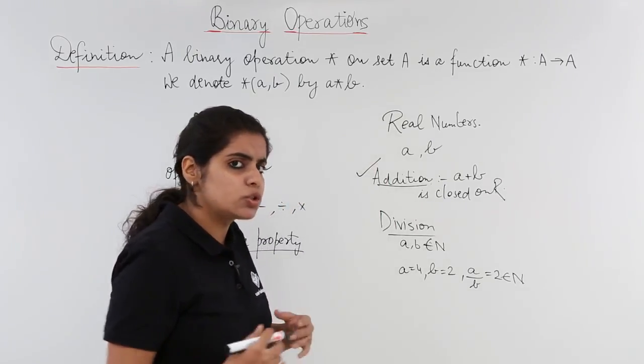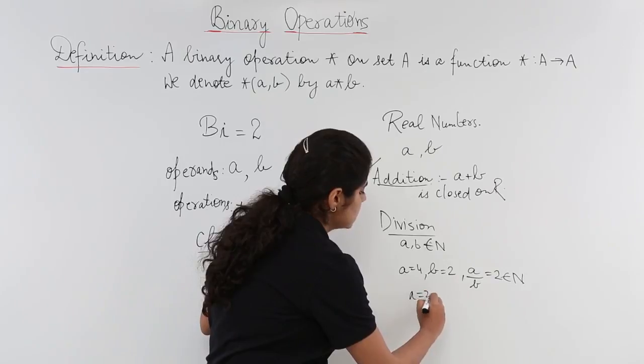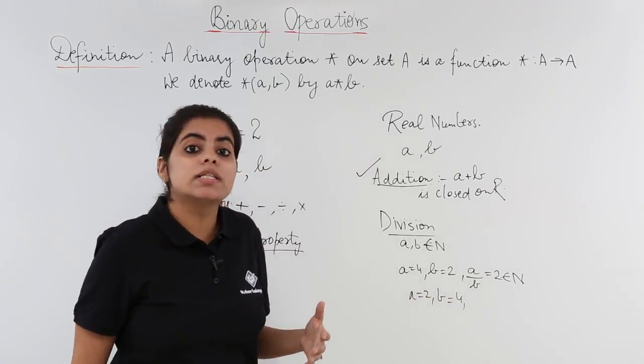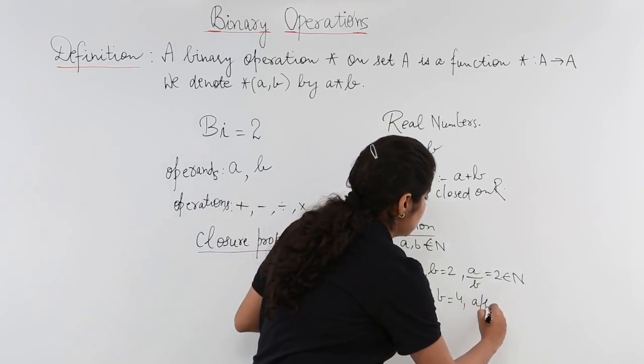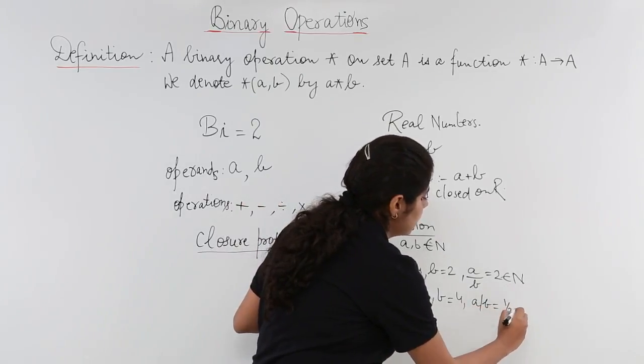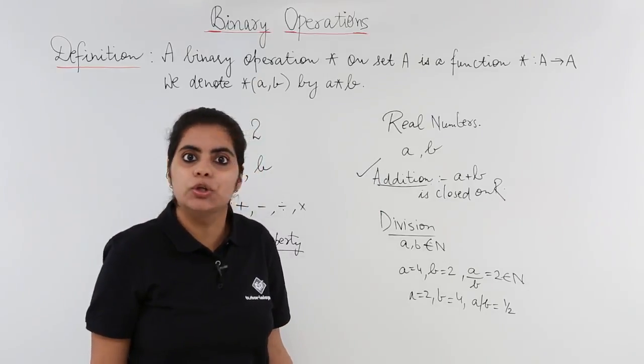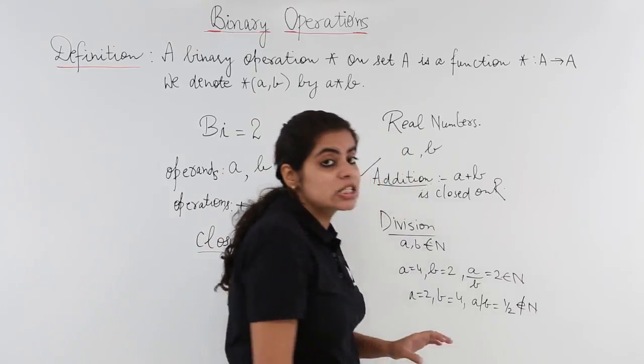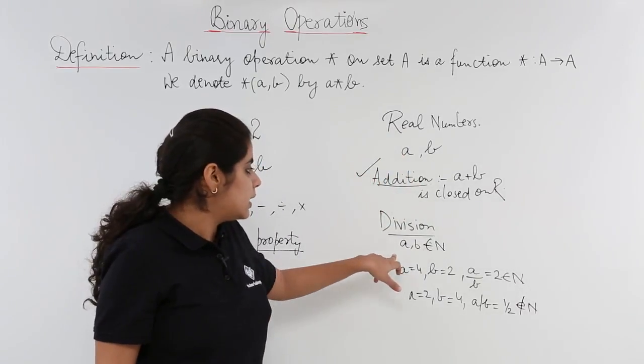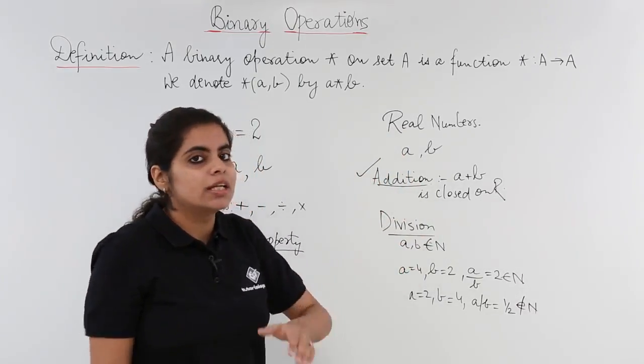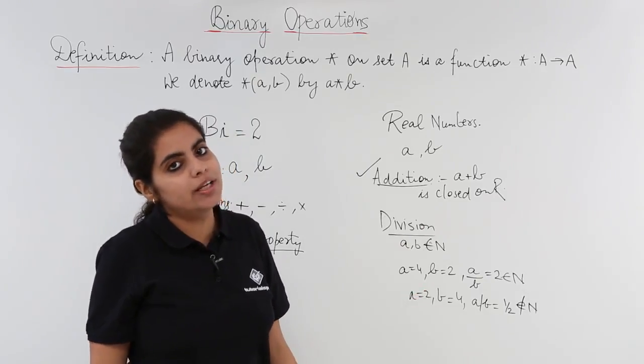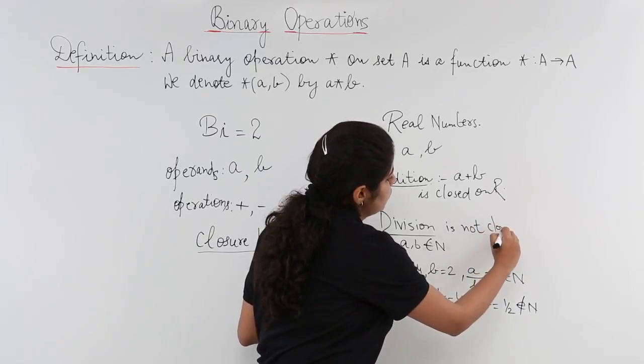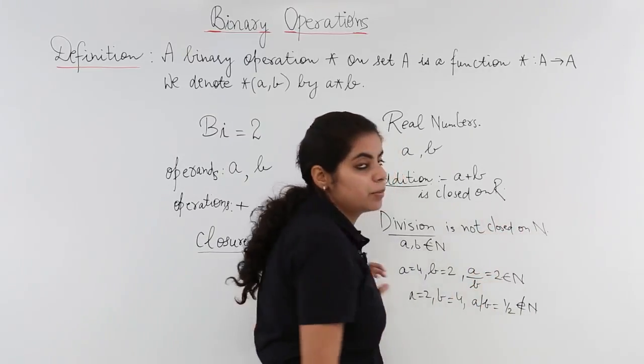But what if the story is different? What if A is 2 and B is 4? Now A upon B is 1 upon 2. Is 1 upon 2 a natural number? No, it's not. It does not belong to the set of natural numbers. That means division cannot be closed on natural numbers.